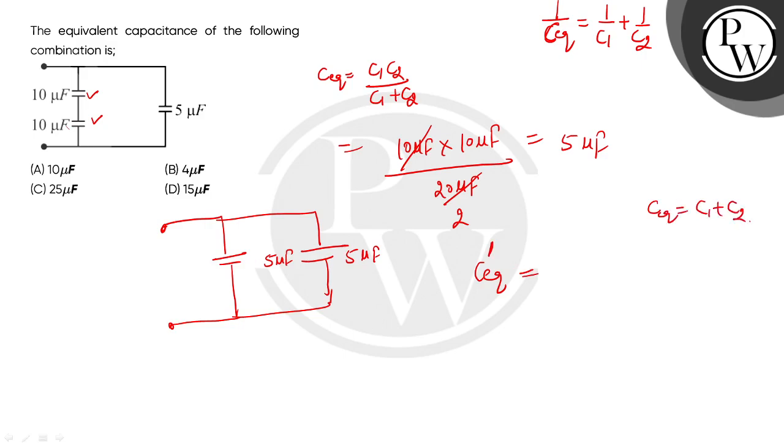C1 plus C2—they are added. That equals 5 plus 5, which will be 10. So C equivalent capacity will be 10 microfarad, which you can see in option A. Option A would be the correct choice.